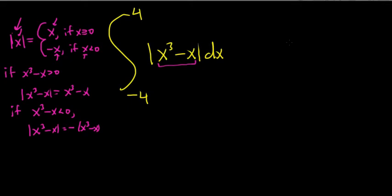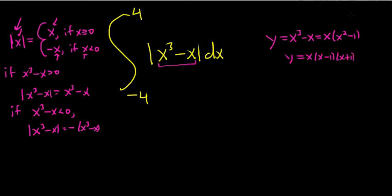We have to think about when it's positive and when it's negative, so let's look at the graph of x cubed minus x. If you factor out an x, you get x times (x squared minus 1). You can factor this further: x times (x minus 1) times (x plus 1). Setting this equal to 0 gives three x-intercepts: 0, 1, and negative 1, and all of them have odd multiplicity.